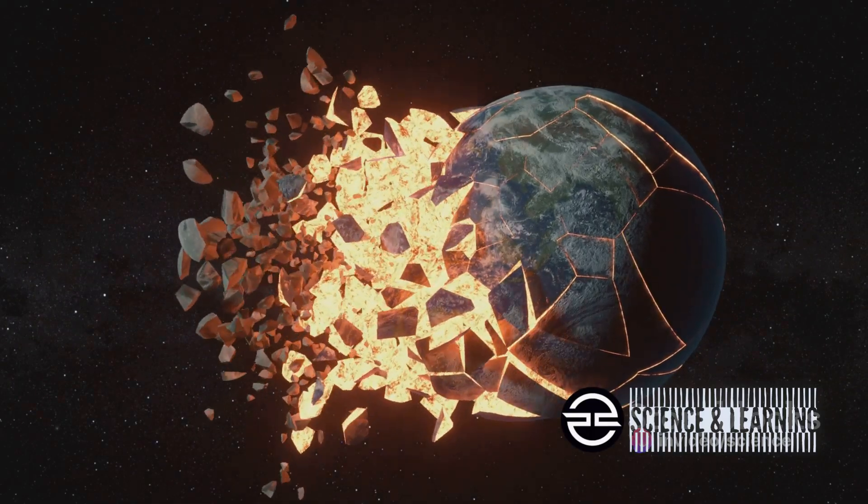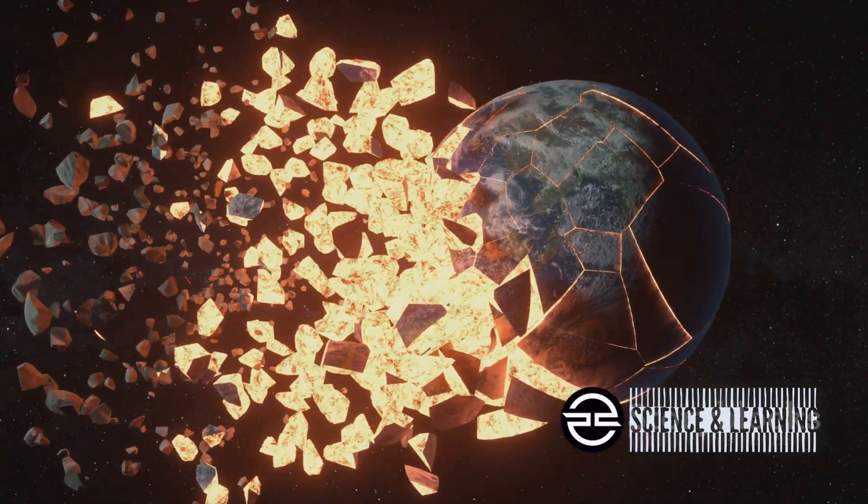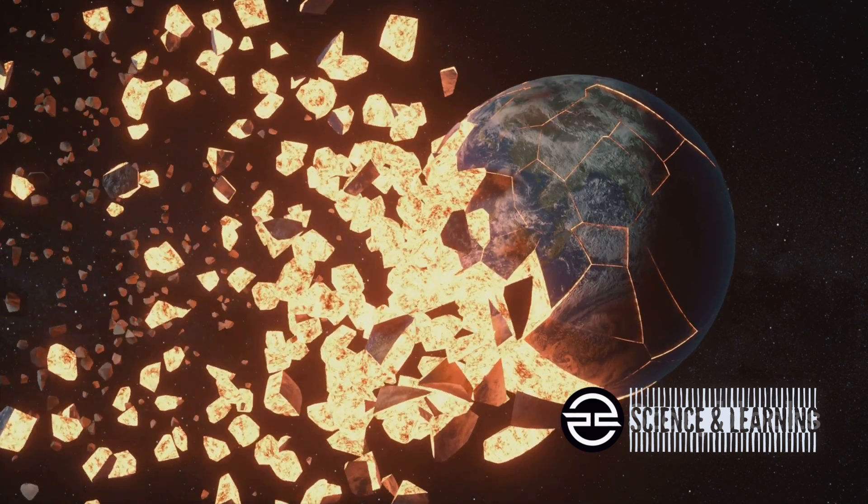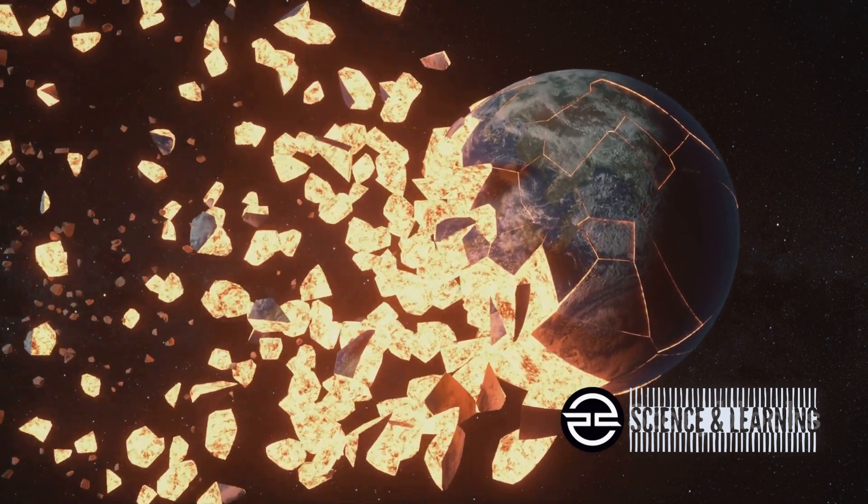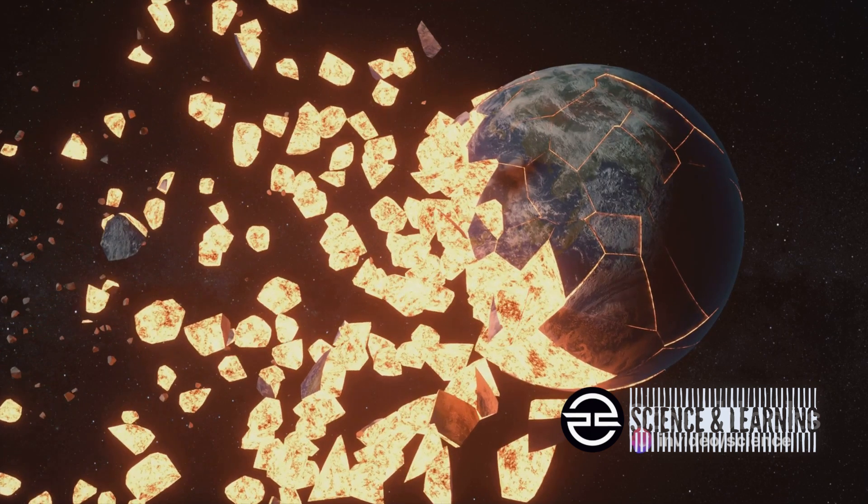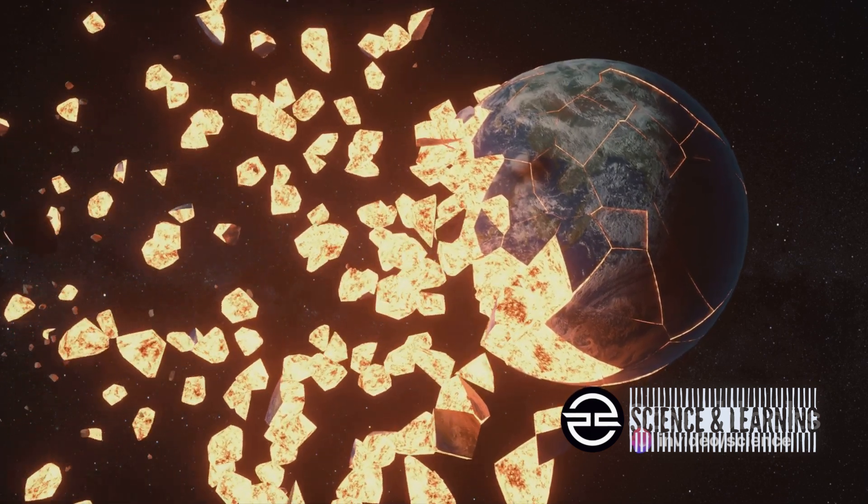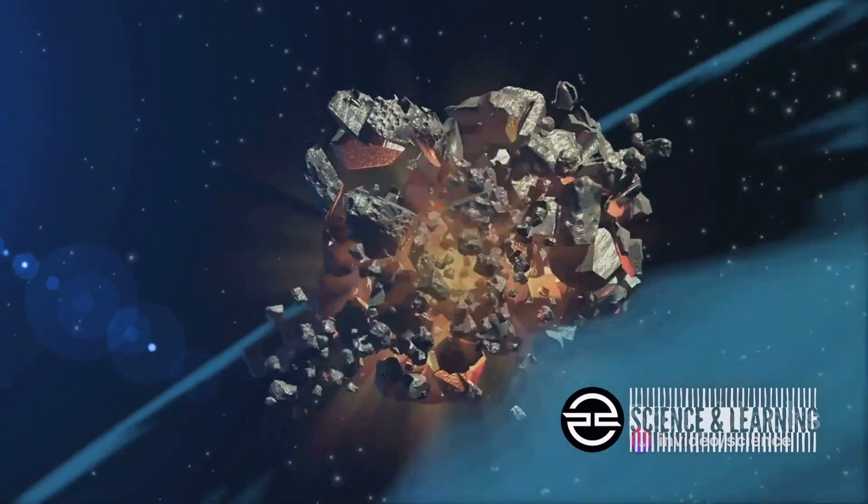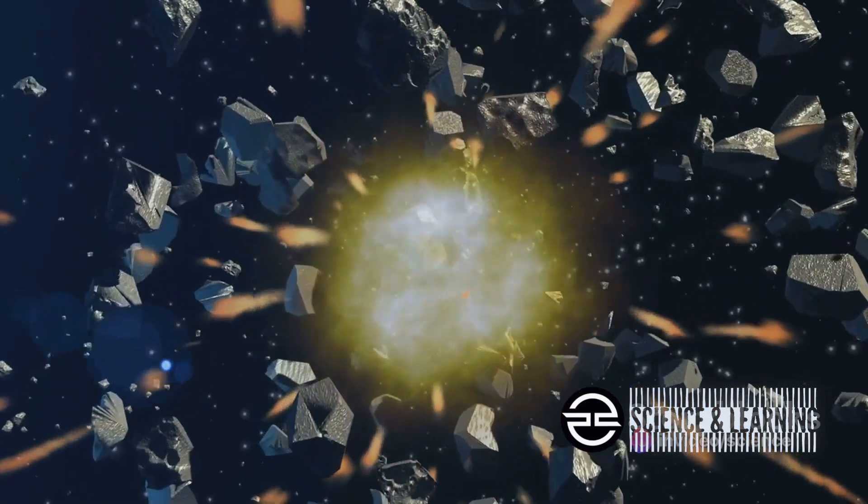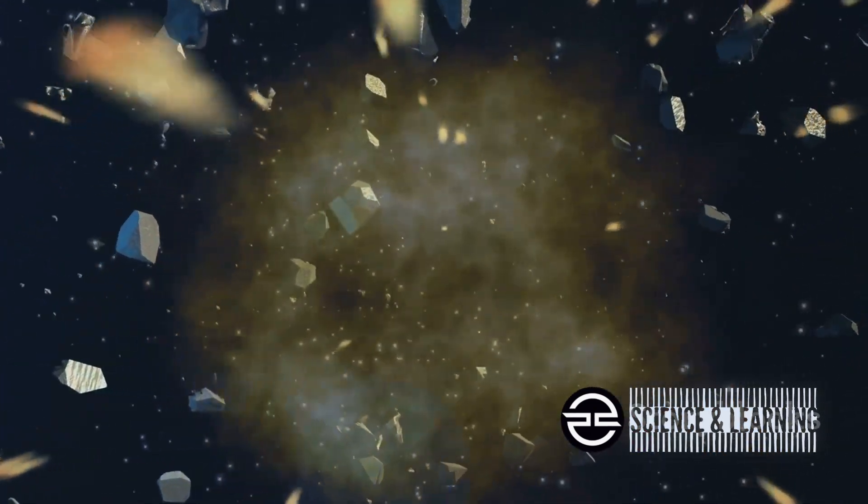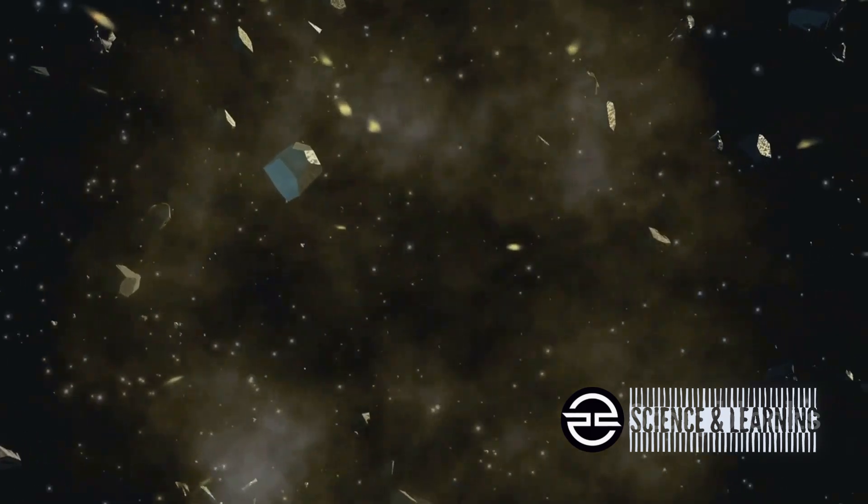The impact of this celestial body would be equivalent to 3 billion tons of high explosive. To visualize, it's like detonating every nuclear weapon on Earth at once, then doing it again. Cities would be flattened, oceans would boil, and the sky would be filled with dust and debris, blocking out the sun and causing a nuclear winter.